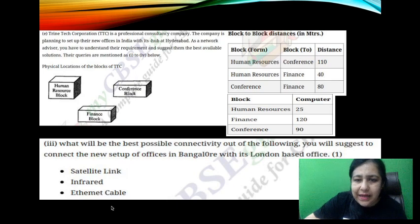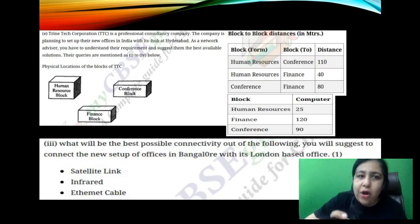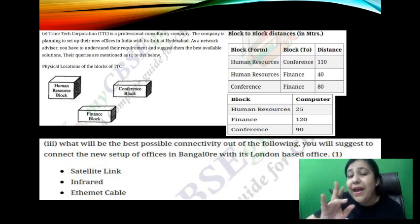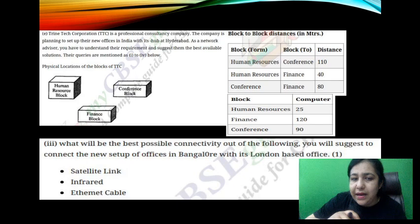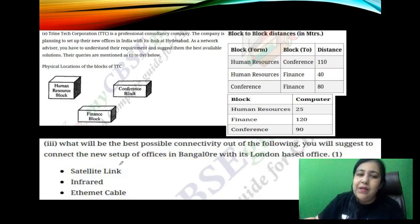Next question: what will be the best possible connectivity out of the following? You will suggest how to connect the new setup of offices in Bangalore with its London-based office. Our office is in Bangalore and the head office is in London. You have to tell us the best possible connectivity. Obviously, it will be wireless over such a long distance.